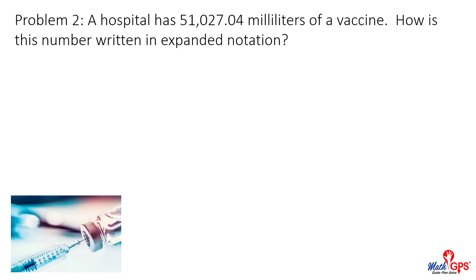Problem two: A hospital has fifty-one thousand twenty-seven and four hundredths milliliters of a vaccine. How is this number written in expanded notation?